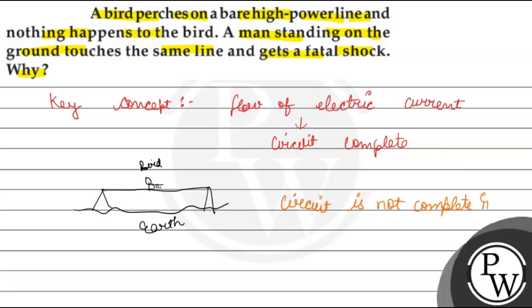So when the circuit is not complete between bird and earth, no current flows. If no current flows, nothing happens to the bird.